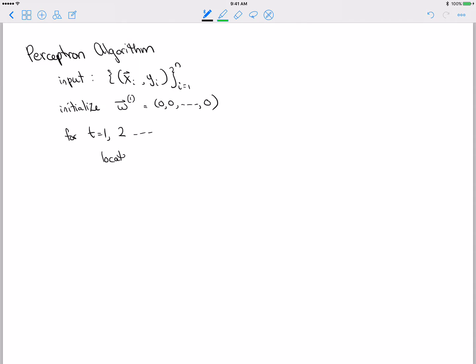what you do is locate an i that's misclassified. Because remember, the algorithm can't do anything if the point's correctly classified.